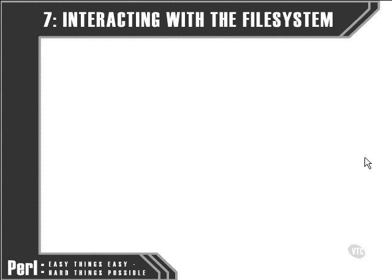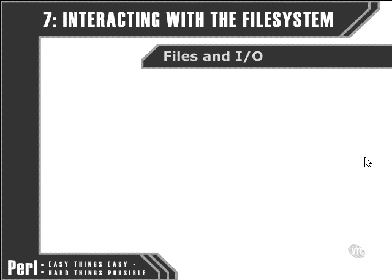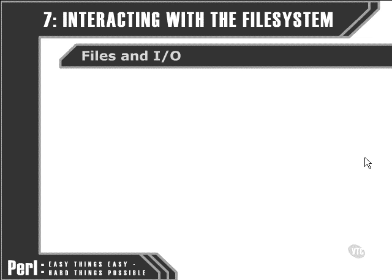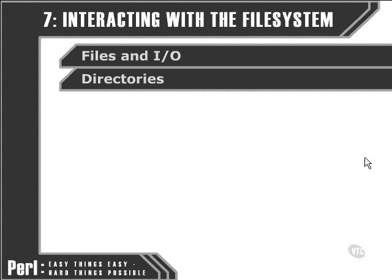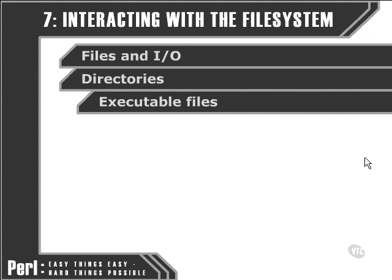In this chapter, we're going to look at Perl's capabilities with regard to interaction with the file system. First of all, we're going to look at how Perl manages files and basic input-output. Then we're going to look at Perl's functions for managing directories, and finally, how Perl deals with other programs. One of Perl's greatest strengths is its ability to act as a glue between more powerful programs, allowing us to provide a platform to bring other programs together and let them interact through our Perl scripts.